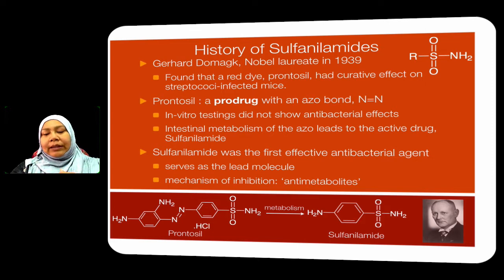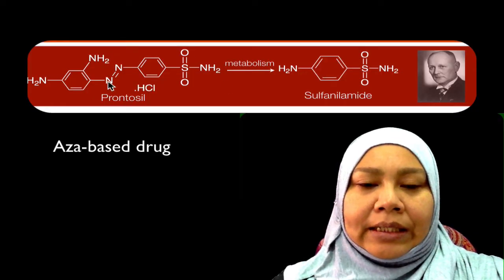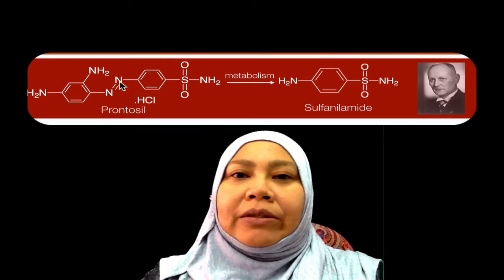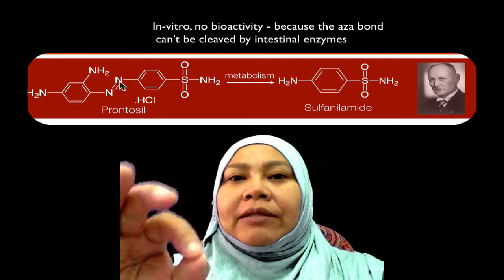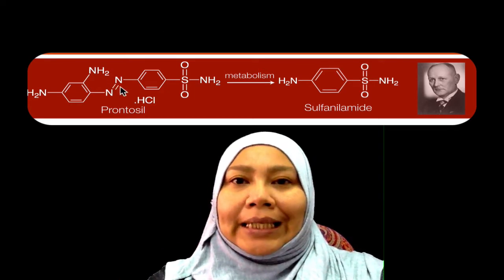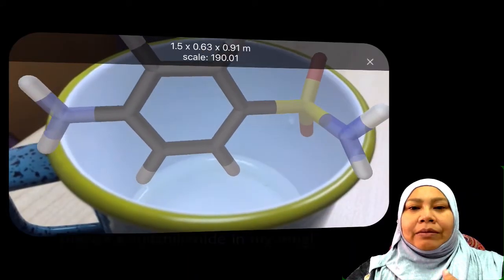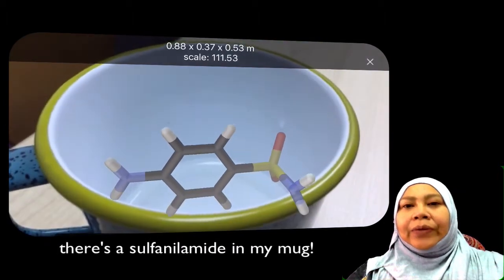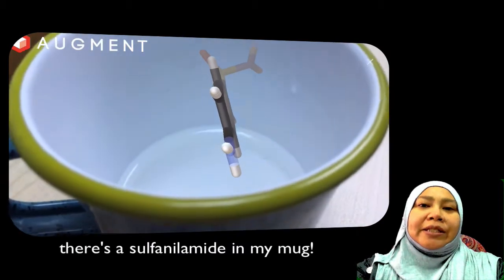He did further study and found that Prontosil is a prodrug — it's an azo drug. In vitro, it has totally no biological effect. However, when Prontosil is given to infected mice, this azo bond is broken in the intestine, and that gives sulfonamide. So sulfonamide is the active ingredient in curing the infection. Sulfonamide is the first effective antibacterial agent, and it serves as the lead molecule for other sulfonamides.